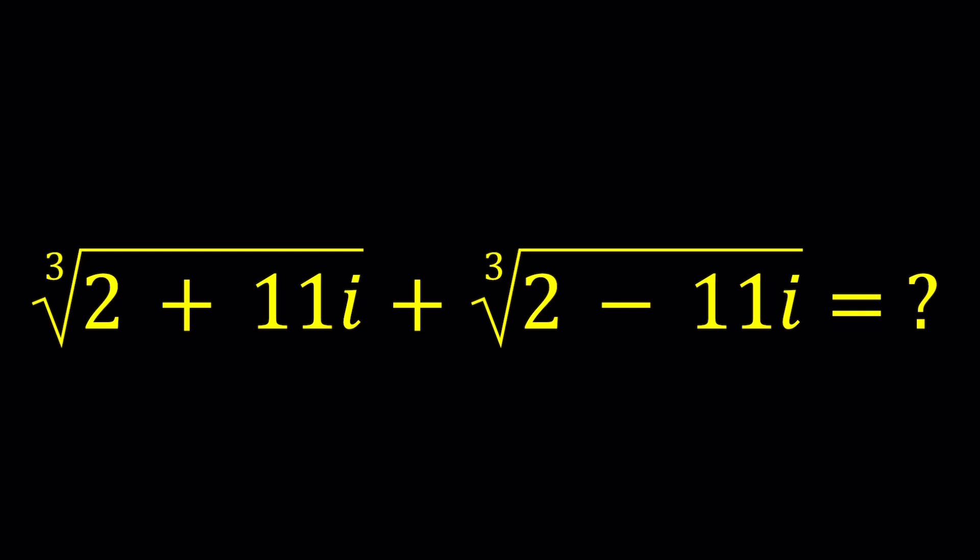We have the cube root of (2 + 11i) plus the cube root of (2 − 11i), and we're going to evaluate this as a numerical expression. Now when I say the cube root, a complex number has three cube roots, but we are talking about the principal cube root.